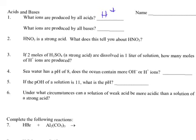I'm going to try to make a plus sign. What type of ions are produced by all bases? Well, that would be hydroxide, which is OH with a minus one charge.